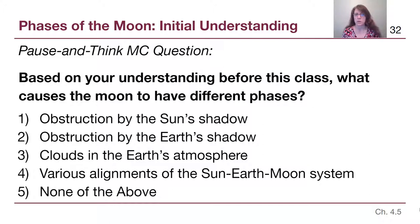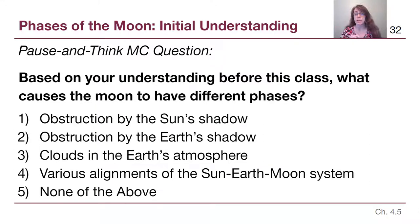As you read through the options, some might feel more silly than others and some you might be struggling to decide between. The correct answer, which we'll understand much better after this video and the next, is option four. The common incorrect answer is option two. Write down in all capital letters in your notes if you chose option two: the phases are not caused by Earth's shadow. Don't feel bad — that's a very common misconception — but we need to fix that incorrect idea right away.